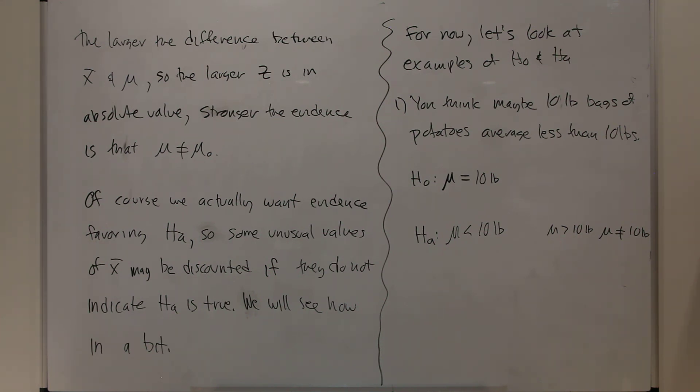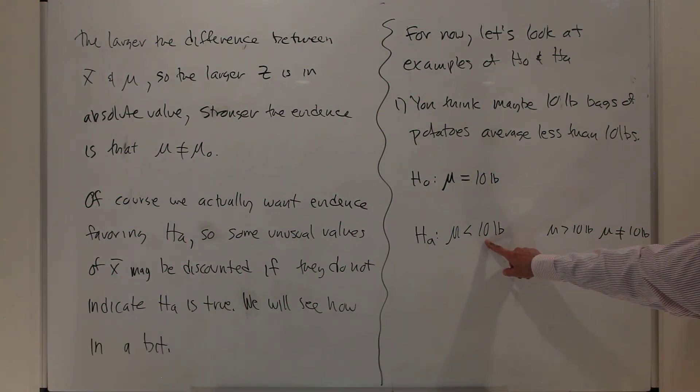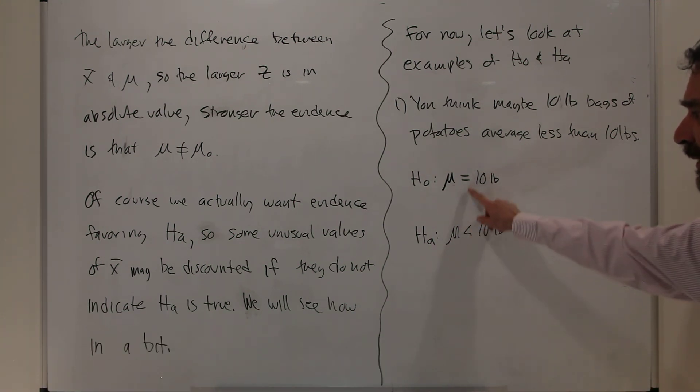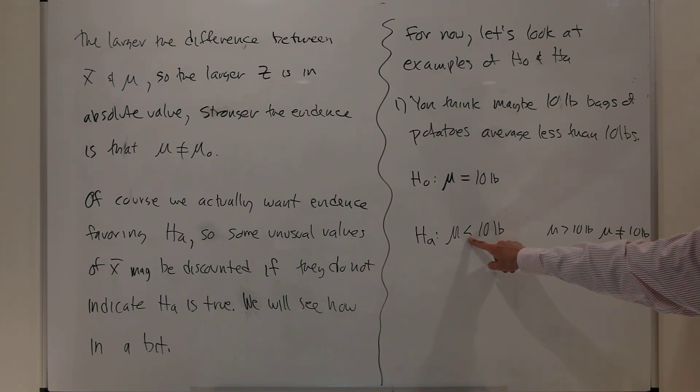For the alternative, it's the same mu. And then there's less than, greater than, or not equal to, and then the same number. So once you've discovered what this number is, that's the same number. That's always mu. That's always mu. That's always equals. That's one of three things: less than, greater than, or not equal to.